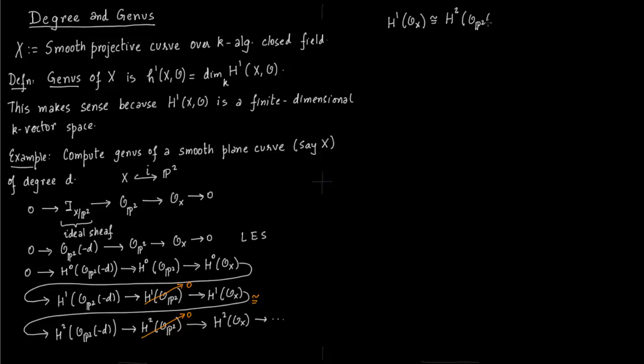So thus the dimension of h¹ we want to find will be equal to dimension of h²(O_P²(-d)). And this we know from theorem 4.1, part c of the theorem: you have (d-1) choose 2 because we are in space O_P². So in the theorem it is (-d-1), but d is already minus d, so minus minus d will make it plus d. So (d-1) choose 2.